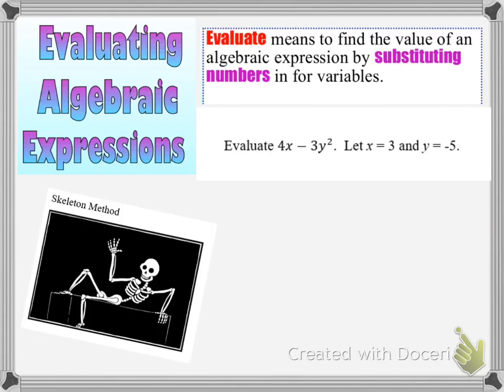We're going to use a method here to help us remember how to do this, and it's called the skeleton method. It's not scary like a skeleton might be, but this allows us to evaluate the expression without making common mistakes when we forget to follow our order of operations. The skeleton method lets us see the expression with the variables taken out — we replace the variables with empty sets of parentheses. We're taking out the insides of the expression and what we're left with is the bones, or the skeleton.